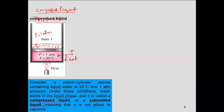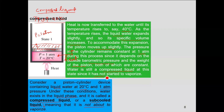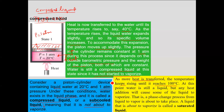If heat is transferred such that the temperature goes to 40 degrees, the liquid water expands and specific volume increases, causing the piston to move slightly upward. The pressure in the cylinder remains constant at one atmospheric pressure because the barometric pressure and weight of the piston are unchanged. Water is still a compressed liquid at this state since it has not started to vaporize. As we continue adding heat and the temperature rises toward 100 degrees centigrade, the specific volume continues to increase.